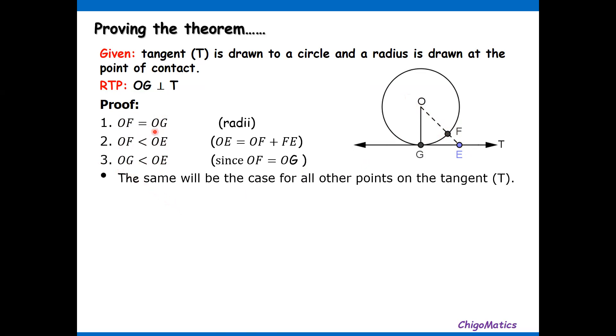Looking at this scenario, we have simply used one point E. But what it means is we have taken another point on T—as long as that point is not G, OG is always going to be less. So the same will be the case for all points on the tangent T.